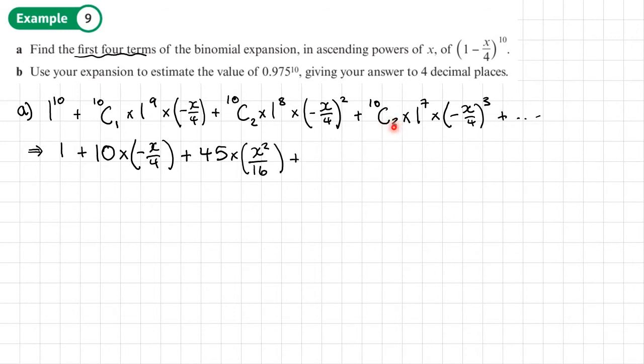Then we get to 10C3, which is 120 times 1^7, which is still 120. And then times by (-X/4)^3, which is going to be -X^3 over 64 and then plus dot dot dot. Now what we're going to do when we write these out, I want to try and keep fractions where I can and write those in front of the X terms. I'll show you what I mean.